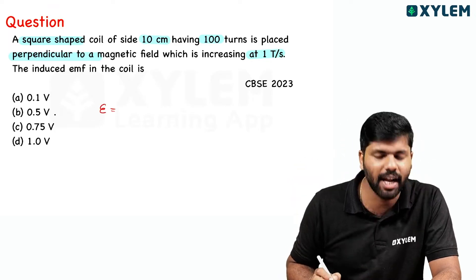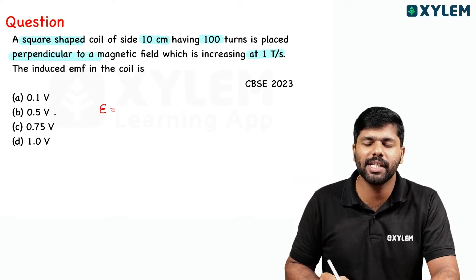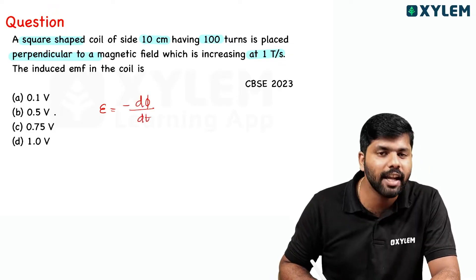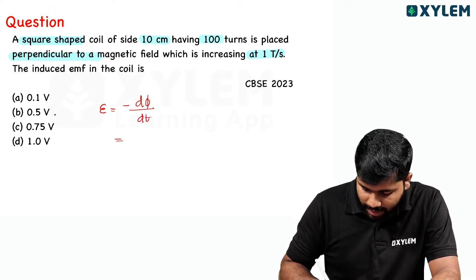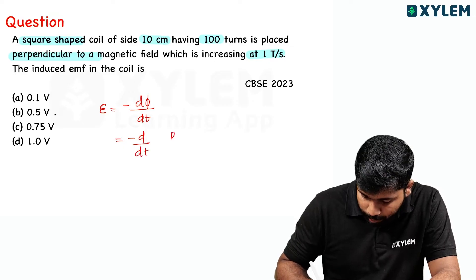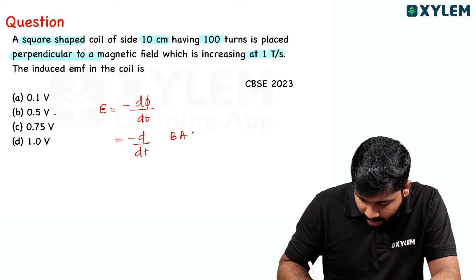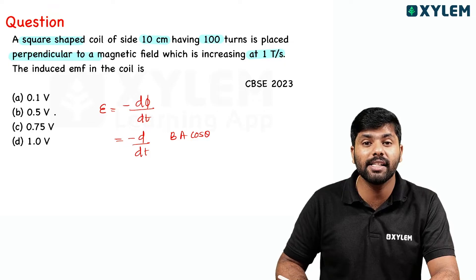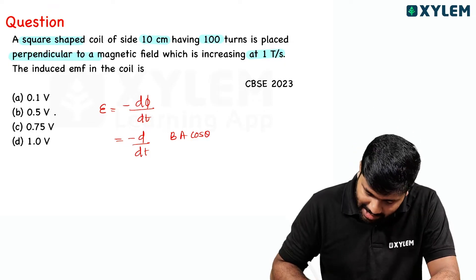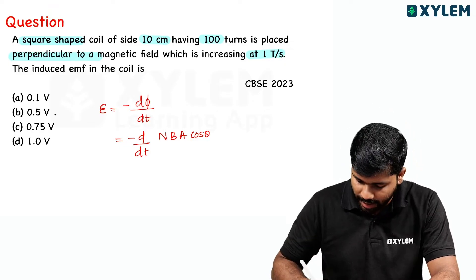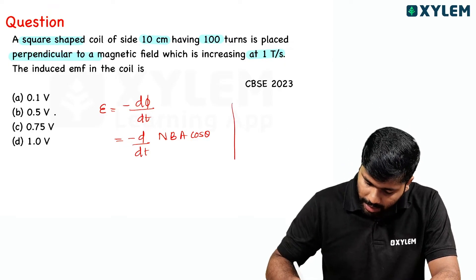Induced EMF? The induced EMF equation is minus dΦ divided by dt. Phi is minus d/dt of BA cosθ. If there are n turns, so there will be n BA cosθ.